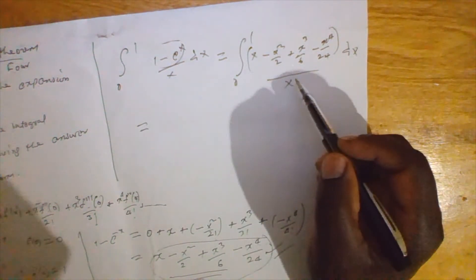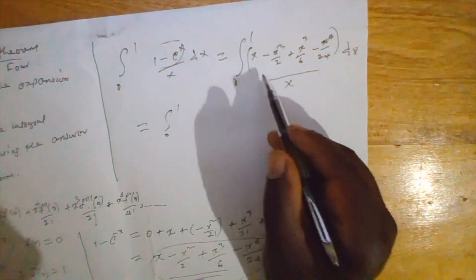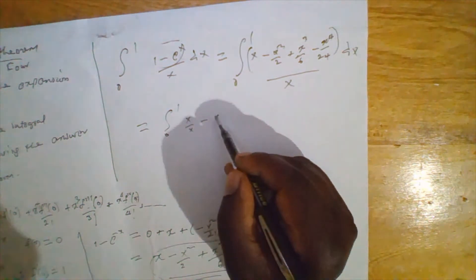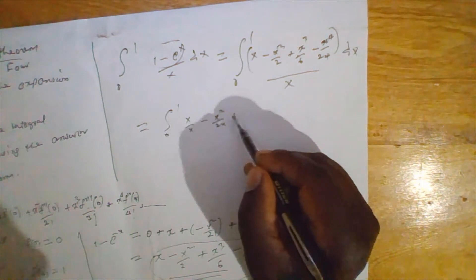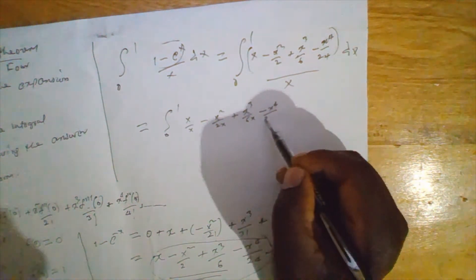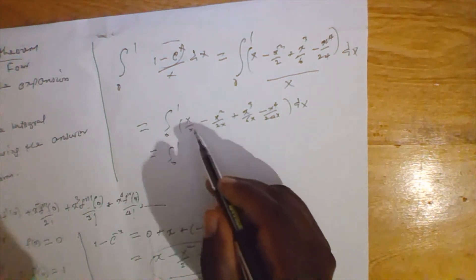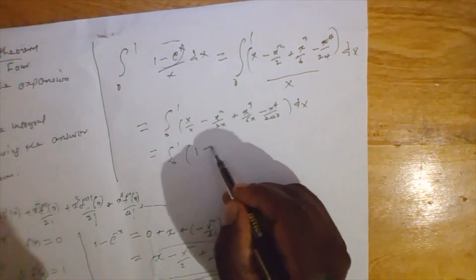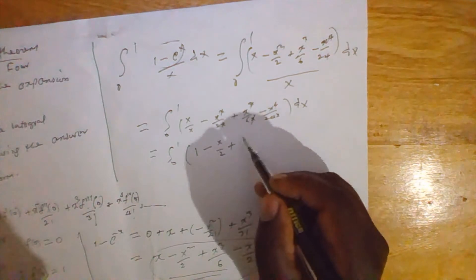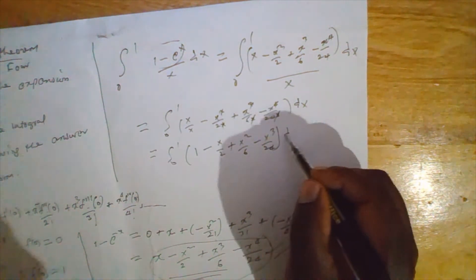Dividing each term by x: x over x is 1, minus x squared over 2x is x over 2, plus x cubed over 6x is x squared over 6, minus x to the 4 over 24x is x cubed over 24. So we have the integral from 0 to 1 of 1 minus x over 2 plus x squared over 6 minus x cubed over 24, dx.